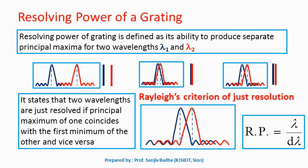If we consider two wavelengths, lambda 1 and lambda 2, lying very close to each other in the diffraction pattern obtained with the grating, the two wavelengths are well resolved. The two wavelengths are well resolved when the spectral lines corresponding to them lie far apart from each other, and the maxima corresponding to those spectral lines also lie far apart from each other.